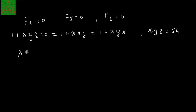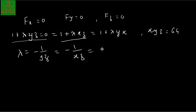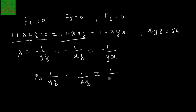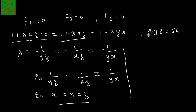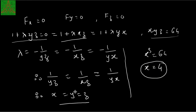From the first equation, lambda = −1/(yz). From the second, lambda = −1/(xz), and from the third, lambda = −1/(xy). So 1/(yz) = 1/(xz) = 1/(xy). Multiplying through by xyz gives x = y = z. Substituting x = y = z into xyz = 64 gives x³ = 64. Since x is a positive integer, the only possible value is x = 4. Therefore y = 4 and z = 4. This is how the Lagrange multiplier method works.